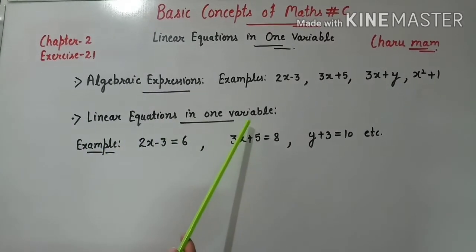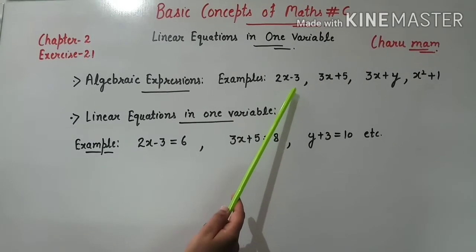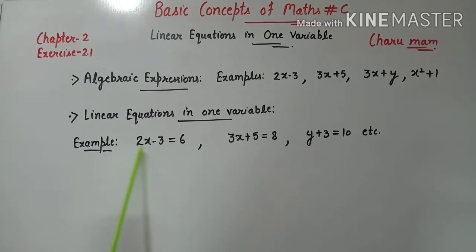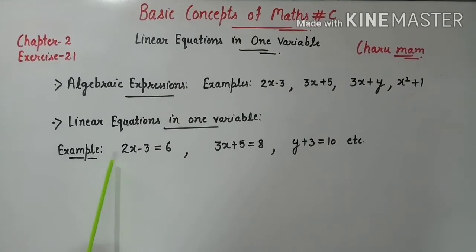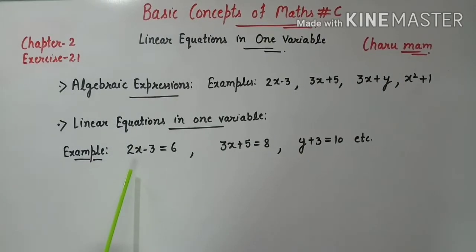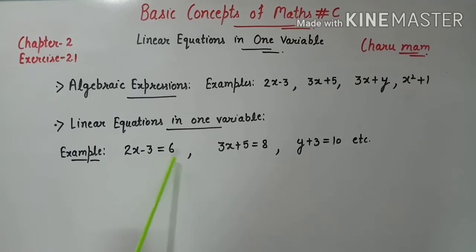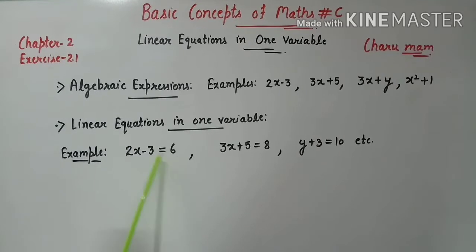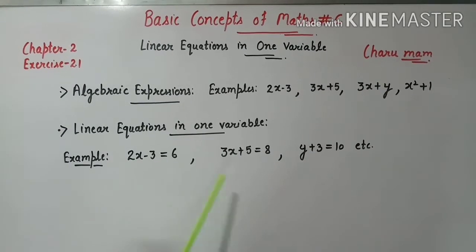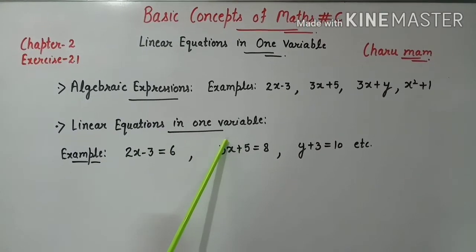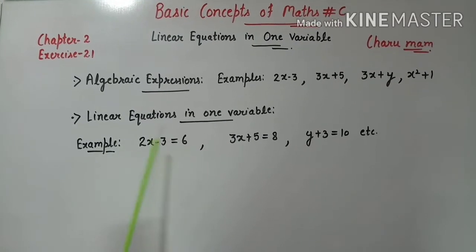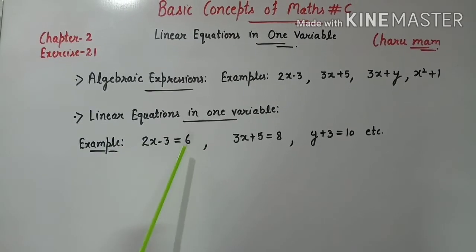Next: linear equations in one variable. अब जो हमने algebraic expression discuss किये थे, अगर हम algebraic expression write करें और equal sign के right side constant term write करें, तो यह क्या बनी? Linear equation. जैसे 2x-3=6, 3x+5=8, y+3=10. यहाँ पर only one variable use किया है, तो वो बनेंगे linear equations in one variable.